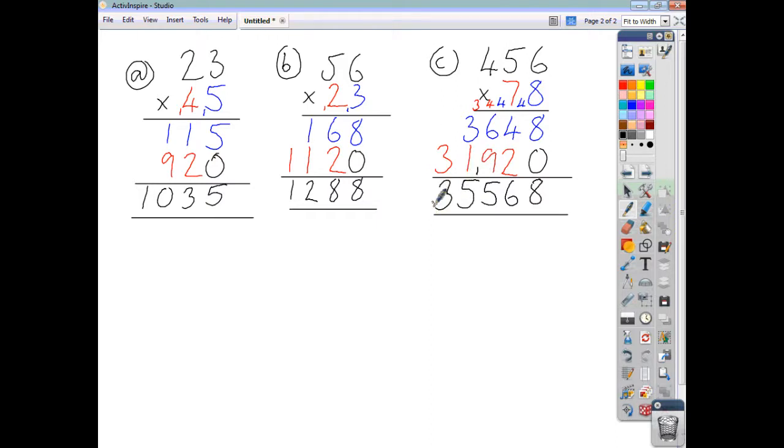3 add 0 is 3. So your answer, 35,000, sorry, 568.